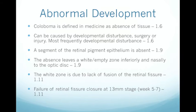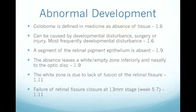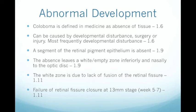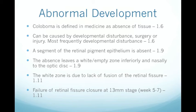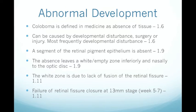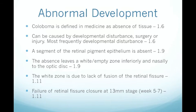Now to abnormal development. In medical terms, coloboma is defined as an absence of tissue, most often caused by developmental disturbance, though surgery and injury to the eye are also causes, albeit far less frequently. In retinal coloboma, the retinal pigment epithelium — the outer thinner layer of the optic cup — is not fully formed, leaving a wide or empty zone inferiorly and nasally to the optic disc. Lack of fusion of the retinal fissure results, where the fissure should have closed at the 13mm stage at 5 to 7 weeks of development.